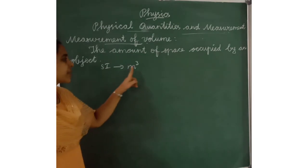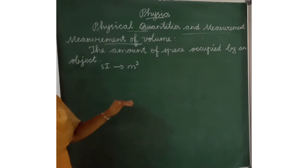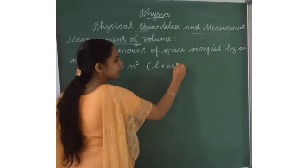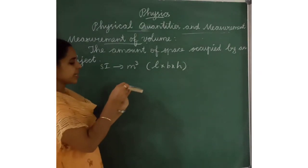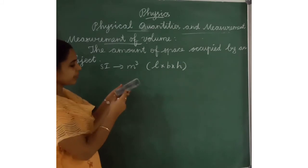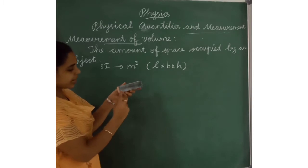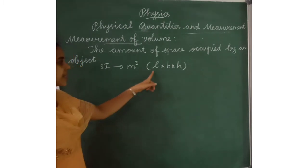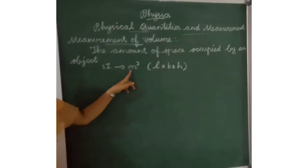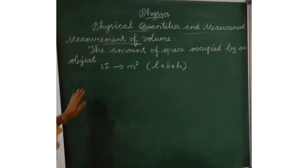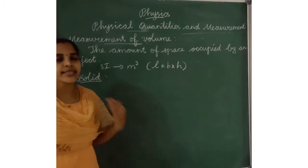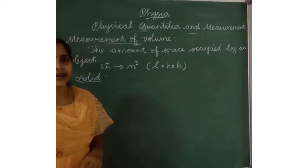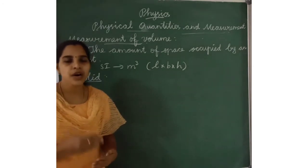The SI unit of volume is meter cube: length into breadth into height, as it has three sides. How do we measure the volume of solids? Some regular solids like cube and cuboid have formulas to find their volume.